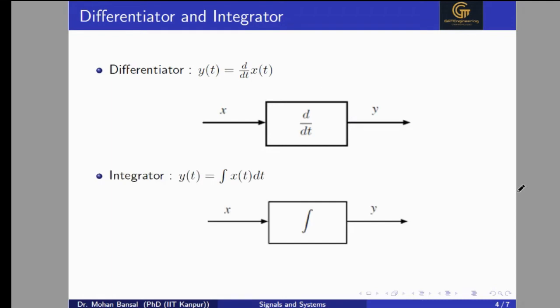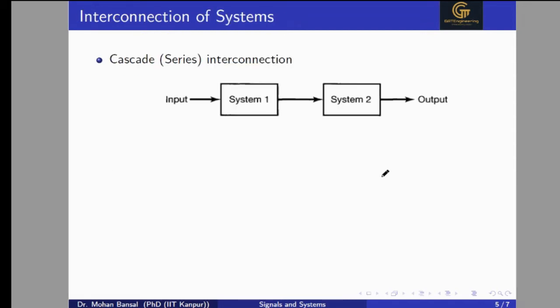In the same way, the integrator is another system where we pass the input signal, and the integrator gives us the integration of X(T) dt. Now we will talk about the interconnection of systems. One is the cascade and series interconnection.